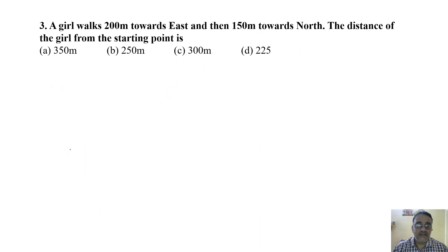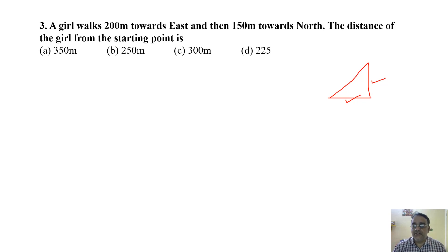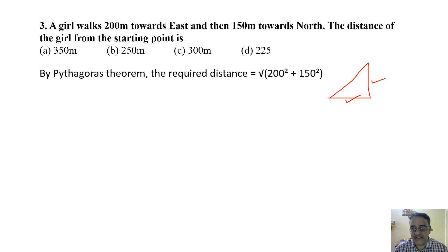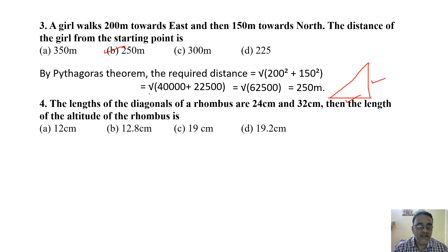Question 3: A girl walks 200 meters towards east and then 150 meters towards north. The distance from the starting point is found using Pythagoras theorem: √(200² + 150²) = √(40000 + 22500) = √62500 = 250 meters. The correct answer is option B.